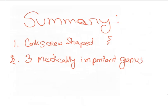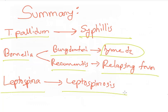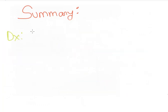Treponema pallidum causes syphilis. Borrelia burgdorferi causes Lyme disease and Borrelia recurrentis causes relapsing fever. Leptospira causes Leptospirosis. The diseases are diagnosed by dark field microscopy.